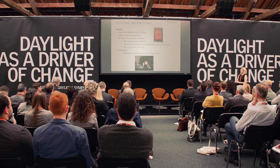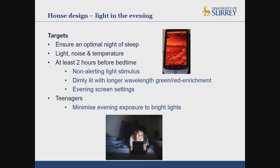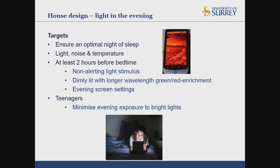When considering light in the evening, what we want to promote is an optimal night of sleep — we need to consider light, noise, and temperature. In the few hours before bedtime, it's really important to be in an environment with a non-alerting light stimulus to help the body prepare for sleep. The rooms people are in during this time should ideally be dimly lit using longer wavelengths — more green-red lights, taking away that blue environment. There are now many devices with evening screen settings that are much more red-lit to remove the alerting blue light stimulus.